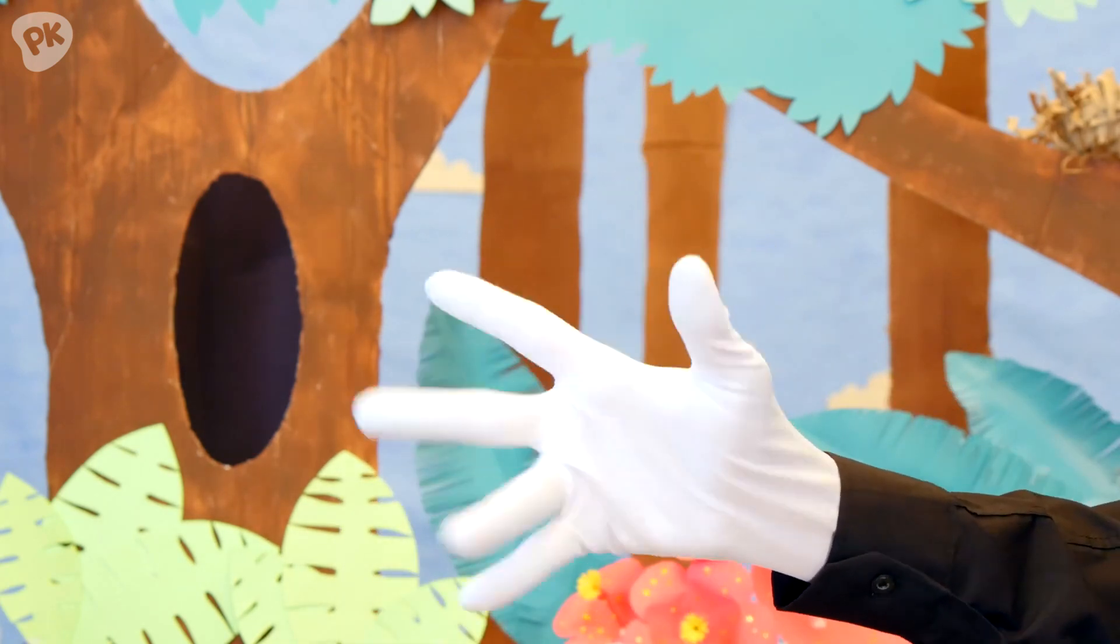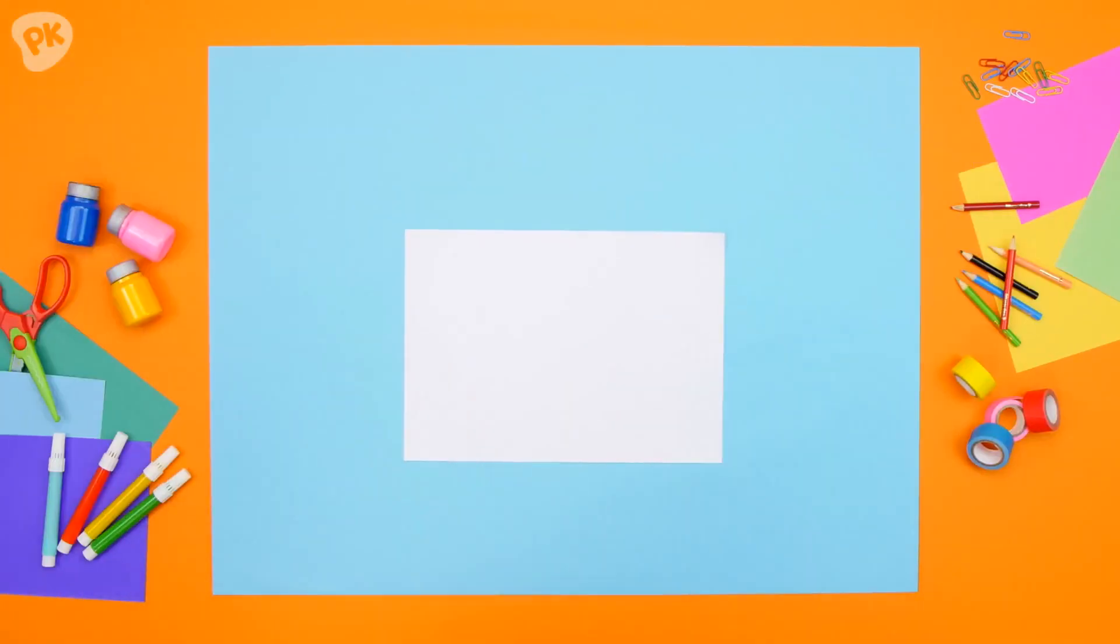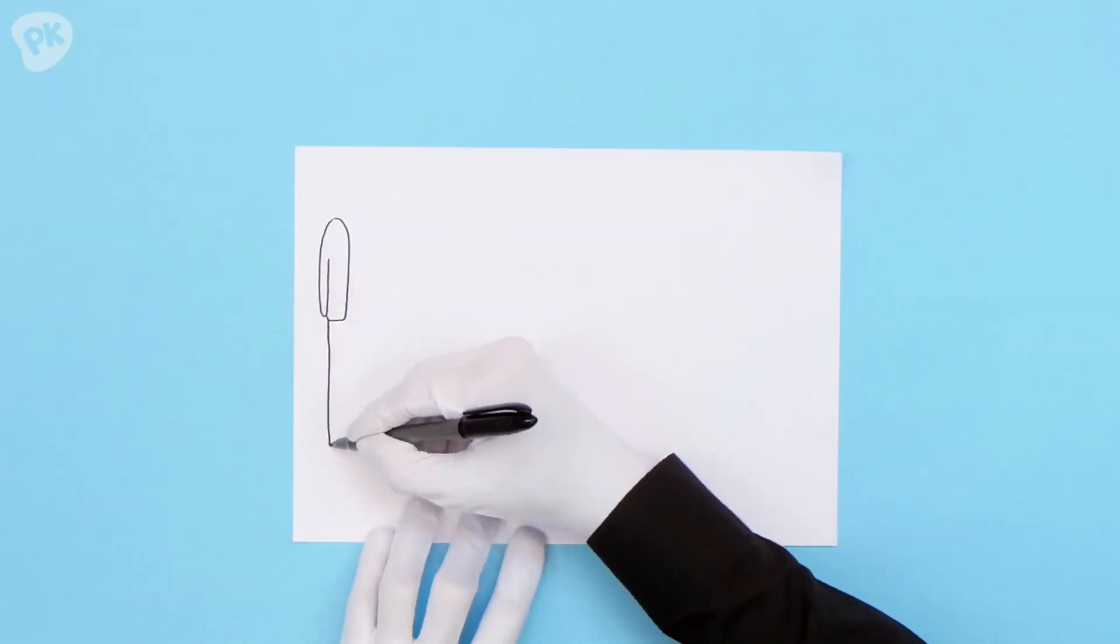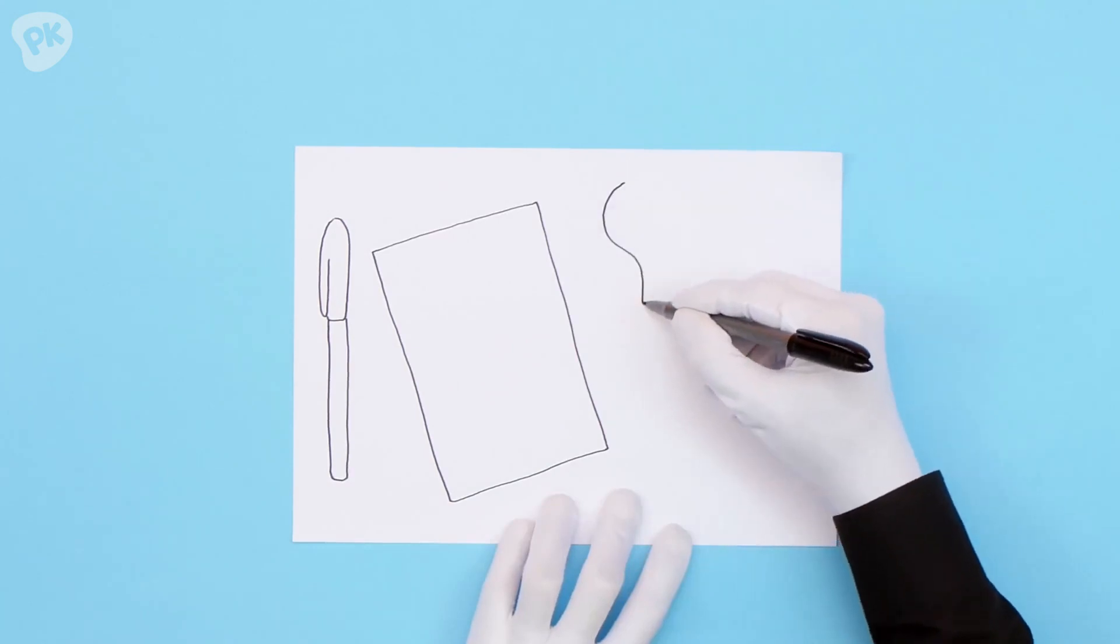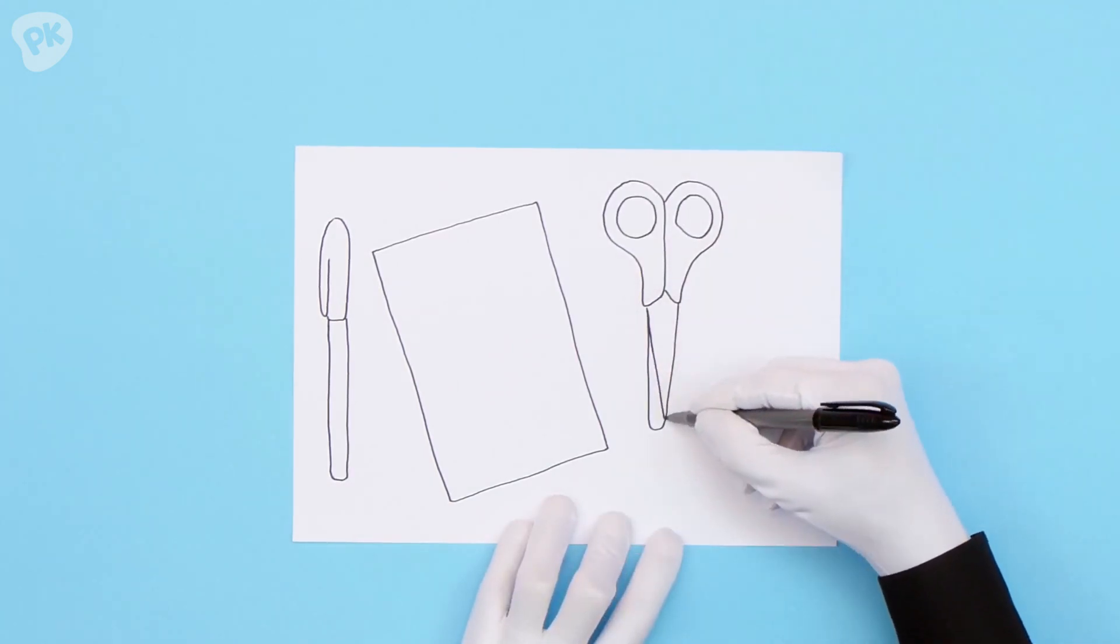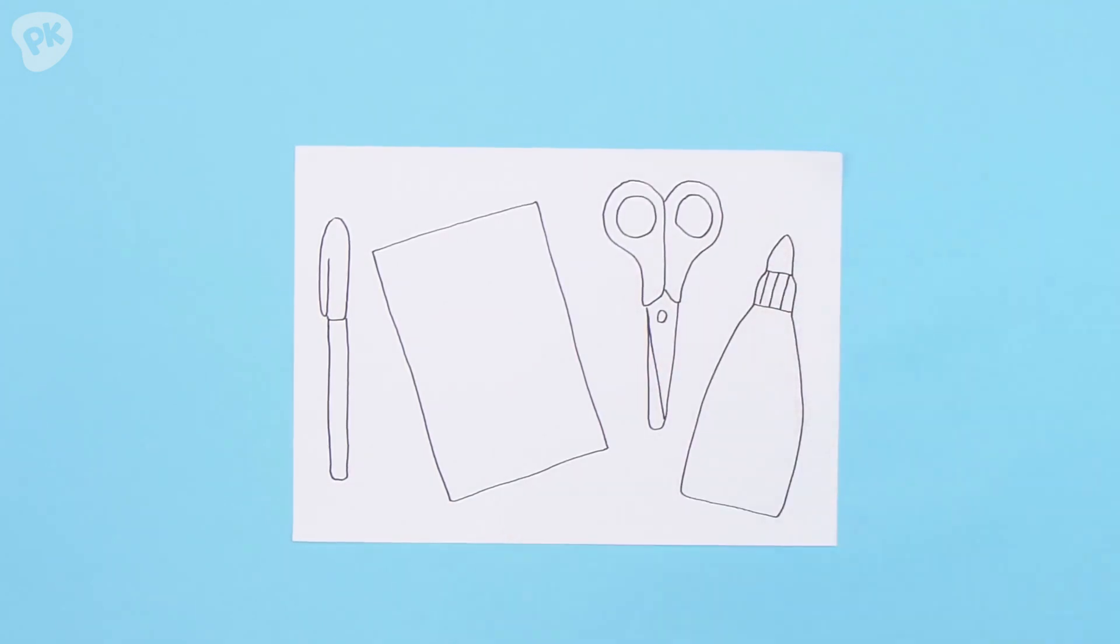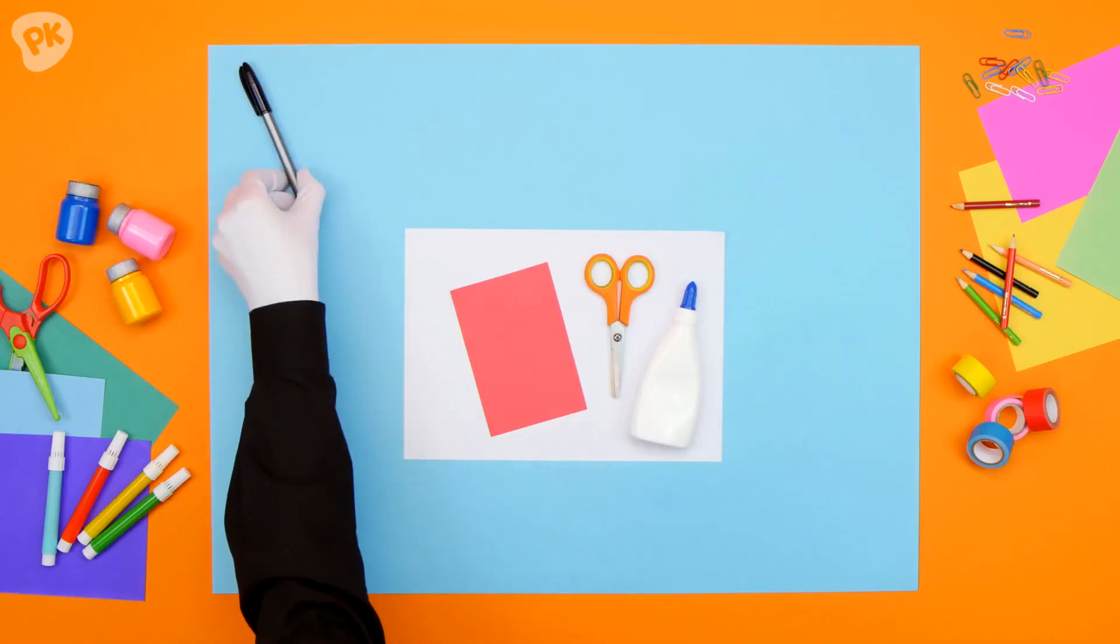And what are we going to need to make that? A colored pen, a piece of paper, blunt scissors, and glue. Ta-da! Let's get busy!